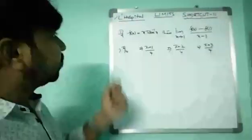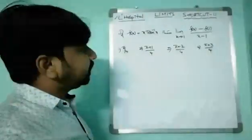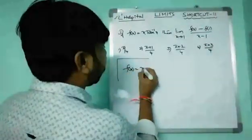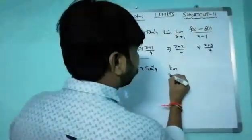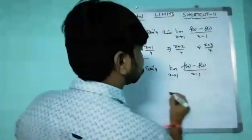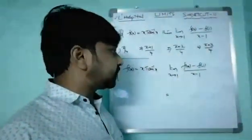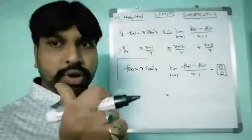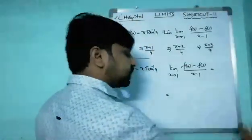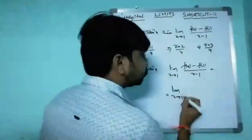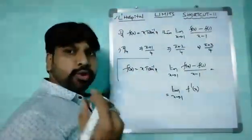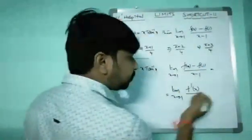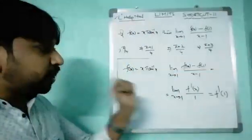Another previous entrance exam question: If f(x) = x·tan⁻¹x, find limit x→1 of [f(x) - f(1)] / (x - 1). Substituting x = 1: f(1) - f(1) = 0 in the numerator and 1 - 1 = 0 in the denominator — this is 0/0 form. Applying L'Hospital's rule: derivative of numerator is f'(x), and derivative of denominator is 1. Substituting x = 1 gives f'(1).